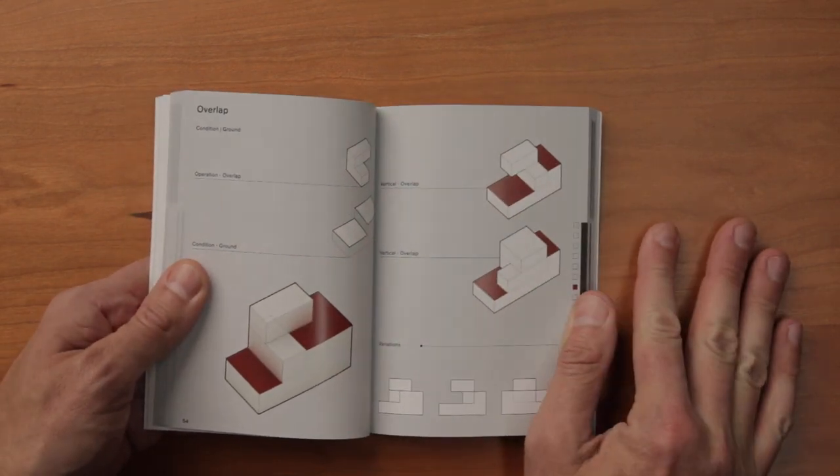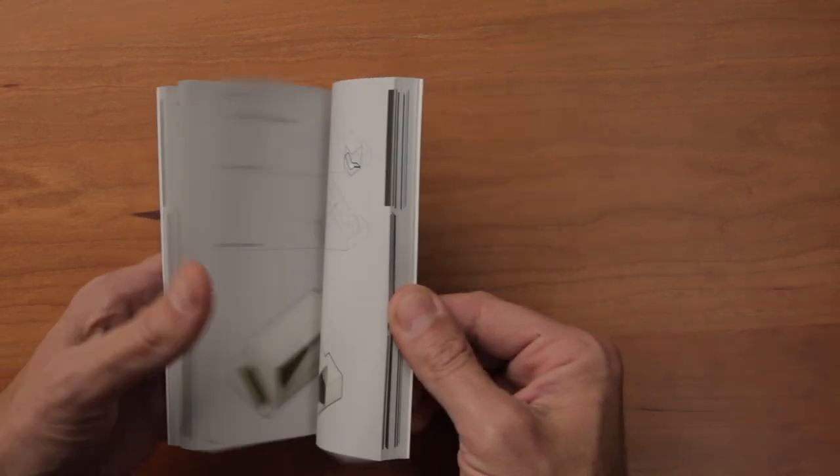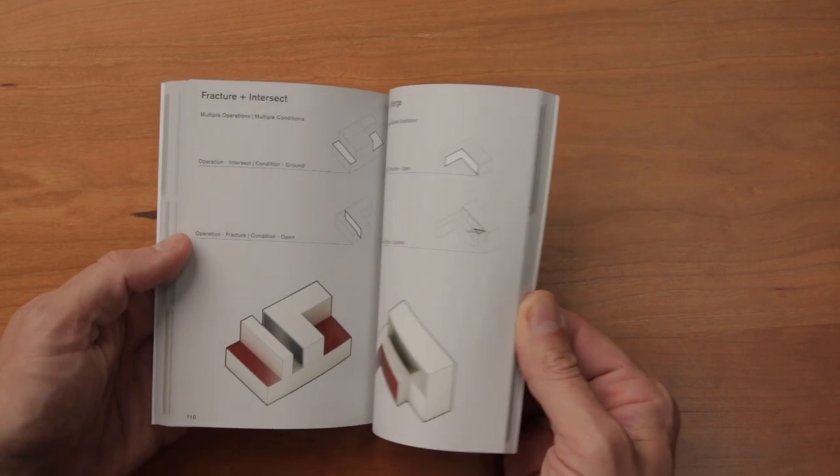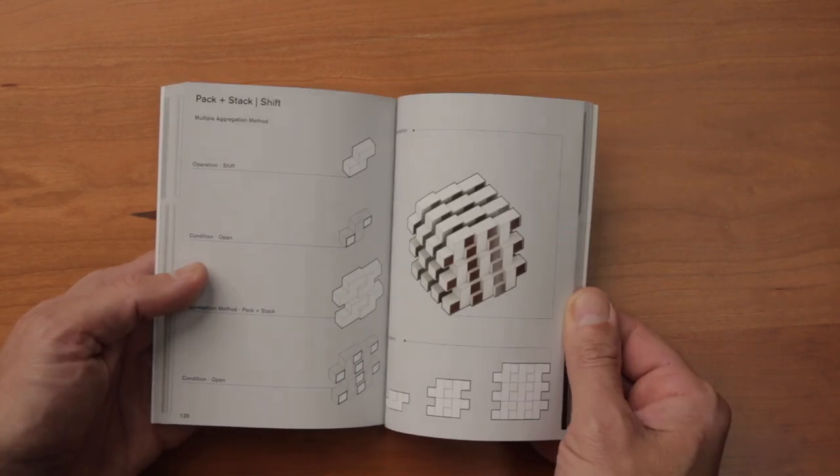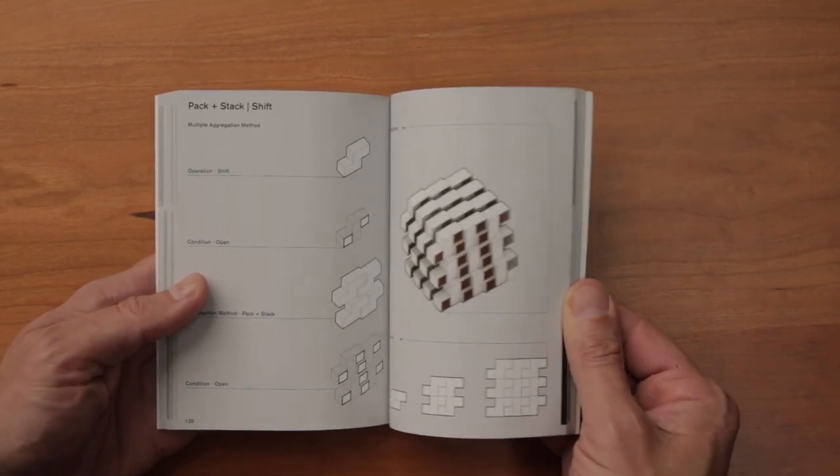Now, the books may seem to promote a kind of kit-of-parts design mentality. One can imagine borrowing the operations or the resultant forms and collaging them together. Now, you might be thinking, ugh, is this what architecture has been reduced to—selecting parts and pieces from a catalog? But before you dismiss it entirely, I do think there's merit to it.